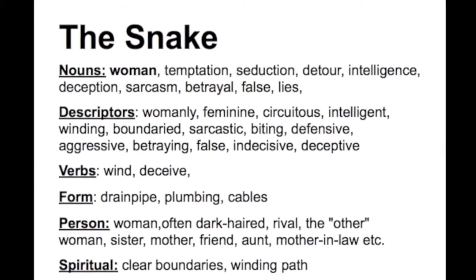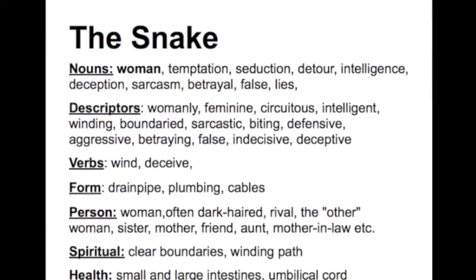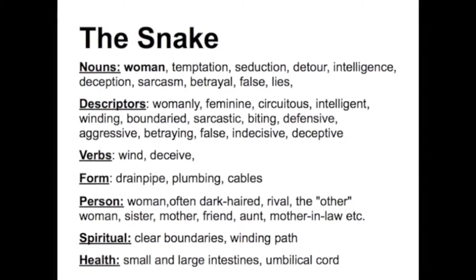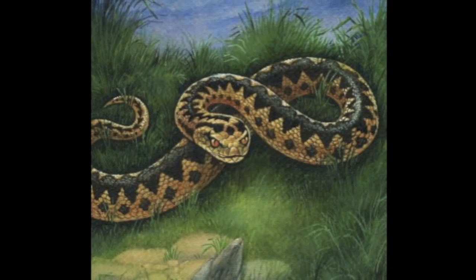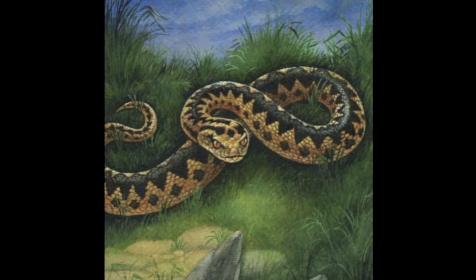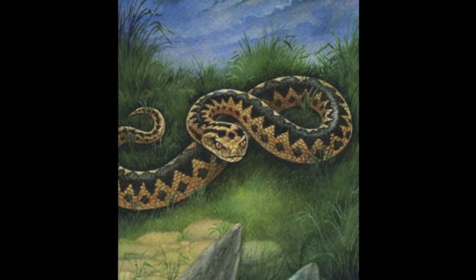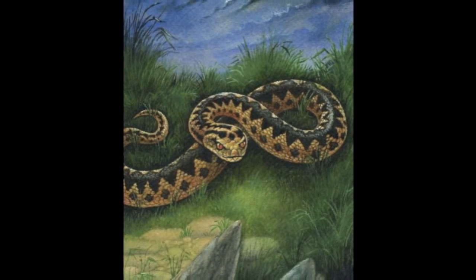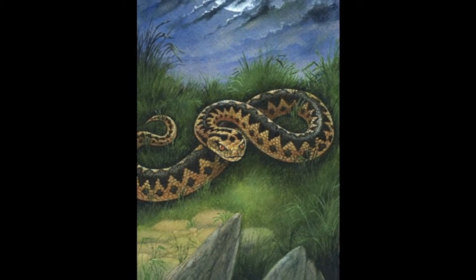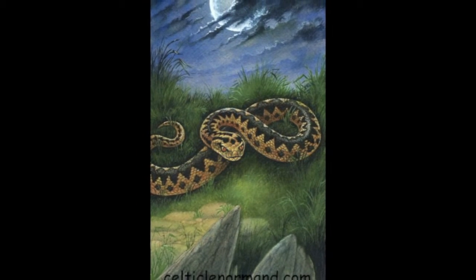The snake can lie hidden in the grass and then rear up to bite you. It's also associated with detours and with intelligence. As a woman, it might sometimes be seen very traditionally as a dark-haired, intelligent woman. In the spiritual side, the ideas of clear boundaries and a winding path are perhaps most important. And in terms of health, we have things like the small and large intestines and the umbilical cord.